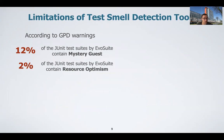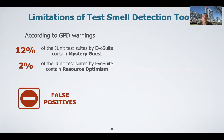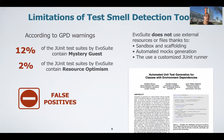I want to briefly describe some of the limitations we identified from the test smell detection tools. According to the GPD warnings, 12% of test suites generated by EvoSuite contain the mystery guest smell, and 2% the resource optimism smell, which is in line with what was reported in related work. However, if you manually validate these instances, we find that all of them are actually false positives. The reason is that these smells are simply not possible in EvoSuite, because EvoSuite mocks out all external resources and does not create files or anything through techniques such as sandboxing, scaffolding, creating mocks in an automated fashion, and using an automated runner that virtualizes external resources like files. So these smell codes are not applicable for automatically generated test suites.